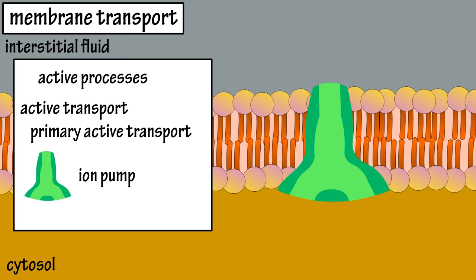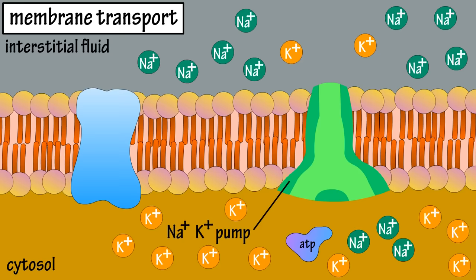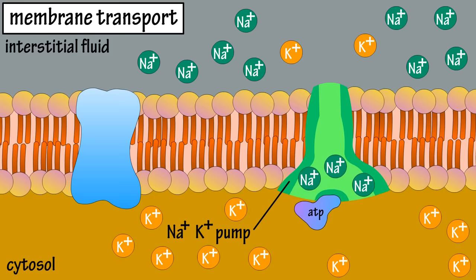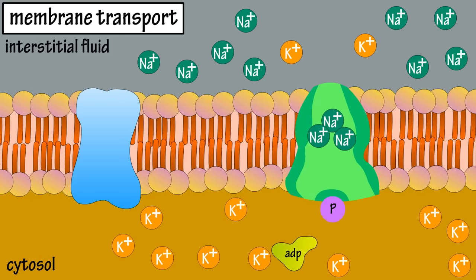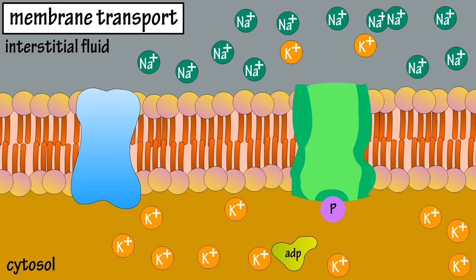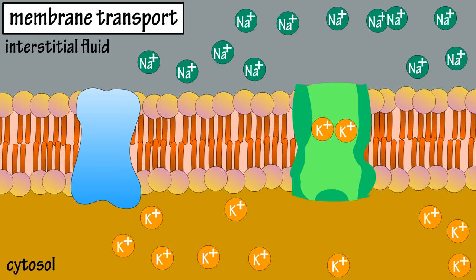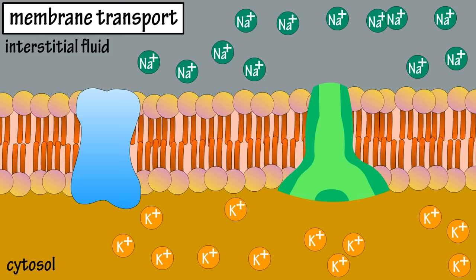Here we have a sodium-positive and potassium-positive protein pump. Three sodium ions and ATP bind to the pump — ATP being the form of cellular energy. ATP breaks down into ADP and P to release energy. P binds to the pump and the release of energy causes the pump to change shape and release the Na+ ions into the interstitial fluid. Two K+ ions then bind to the pump and the P is released into the cytosol. The transport protein reverts back to its original shape, releasing the K+ ions into the cytosol, and the pump is ready to repeat the process.